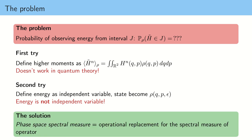The solution that we deem correct and use to construct the toy model of the harmonic oscillator is the phase-space spectral measure. The phase-space spectral measure is the operational replacement for the spectral measure of an operator. It is intuitive why we need this: in quantum theory we need to diagonalize the Hamiltonian to find the spectral measure of the Hamiltonian operator in order to predict the spectrum of possible energies.